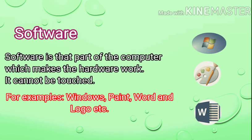Next, software. Software is that part of the computer which makes the hardware work. It cannot be touched. For examples: Windows, Paint, Word, and Logo, etc. All these are software or programs which we work on, but we cannot touch them.